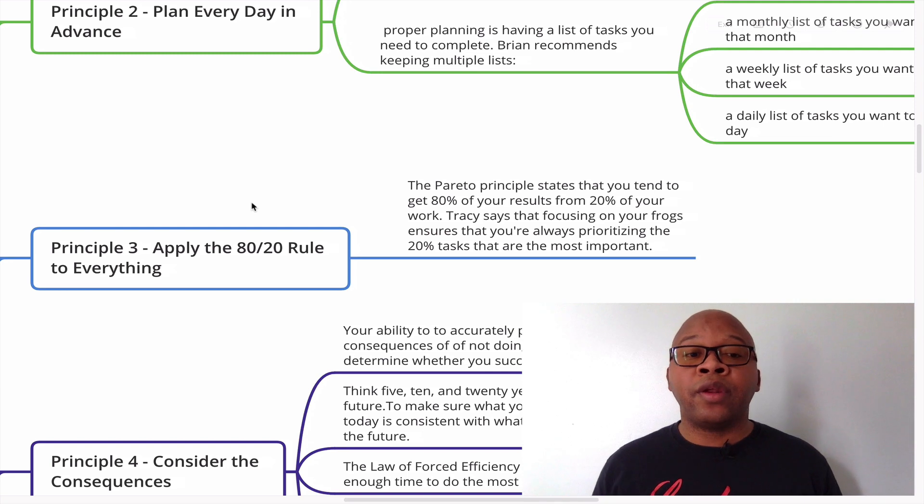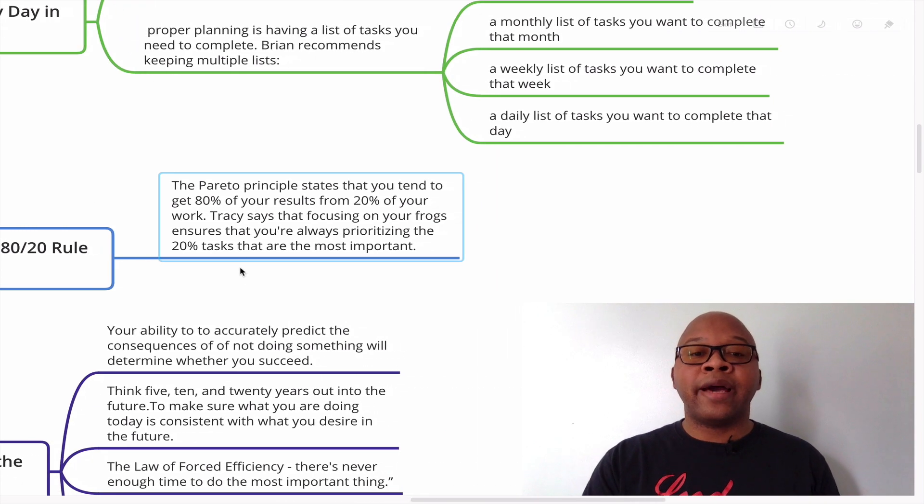Principle number three is to apply the 80-20 rule to everything. The Pareto principle states that you tend to get 80% of your results from 20% of your work. Tracy says that focusing on your frogs ensures that you're always prioritizing the 20% tasks that are the most important.